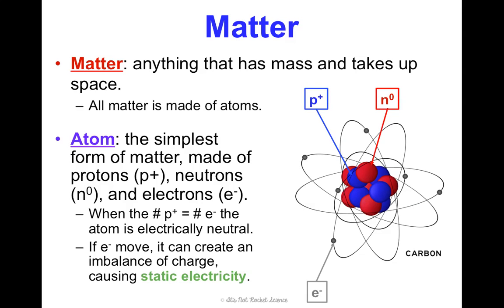If electrons can move around, which they can, we can create an imbalance of charge, and when we do that, it can cause something called static electricity.